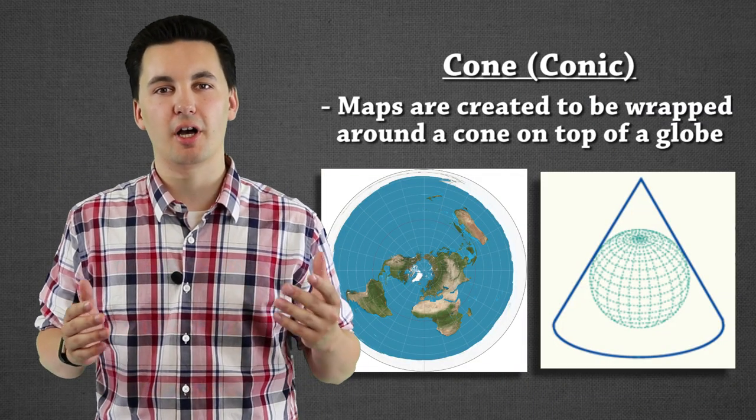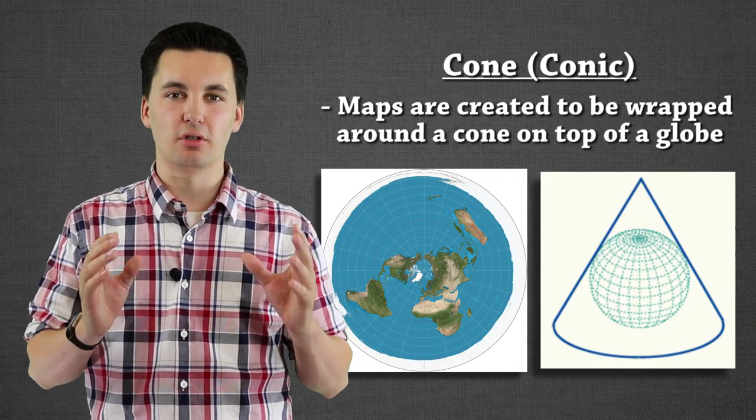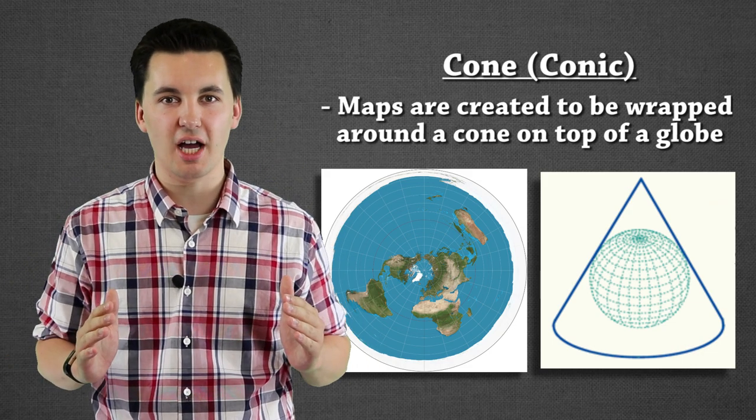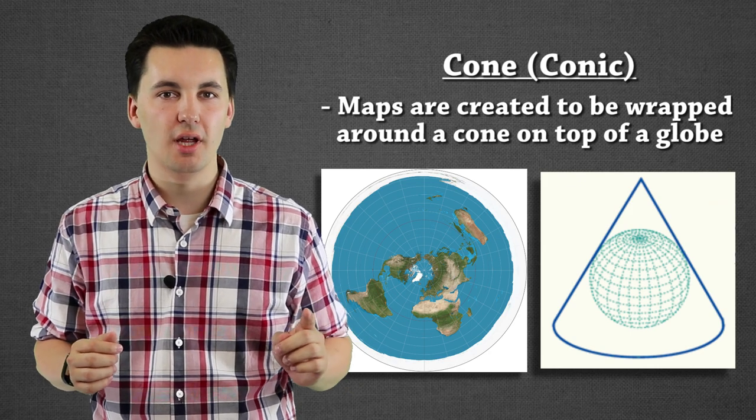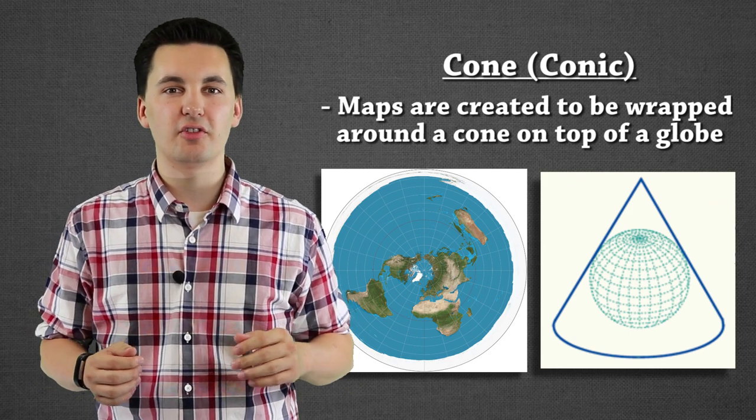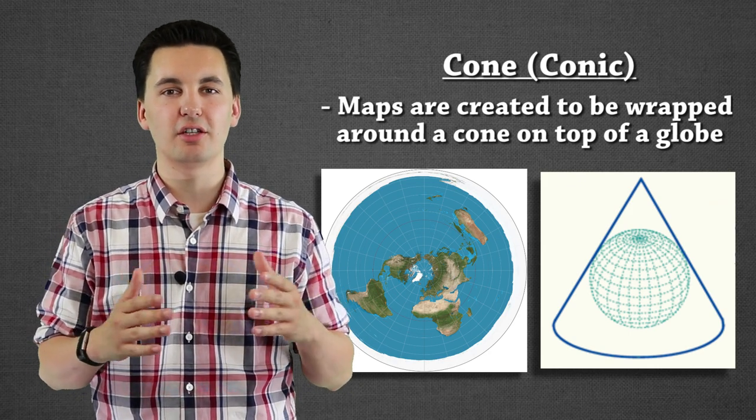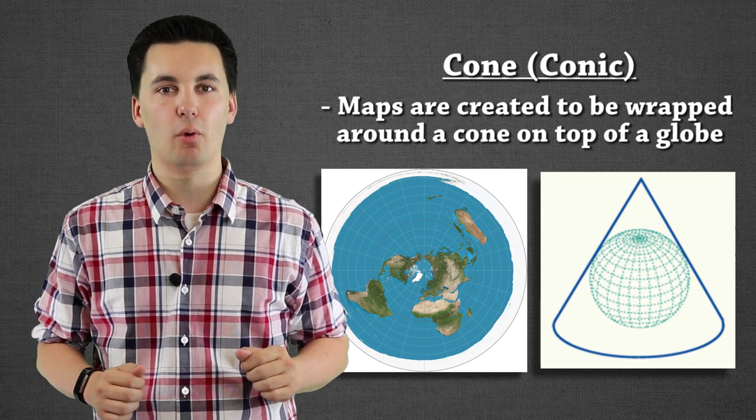Now our next developable surface is the cone or conic. Now what I want you to picture is a globe and picture then a cone going on top of it. Our line of tangency is going to be just the parts that it's touching. This type of developable surface is not meant to accurately portray the entire world. It's only getting a portion of the world.